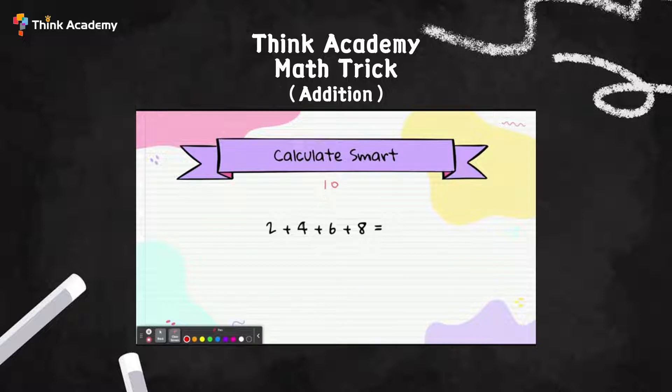What plus what equals 10 in this equation? I can see that 2+8 equals 10, right? And 4+6 equals 10. Super awesome job! Now all I need to do is add the two tens together. 10+10 equals 20. Super awesome! Now let's move on to the next question.